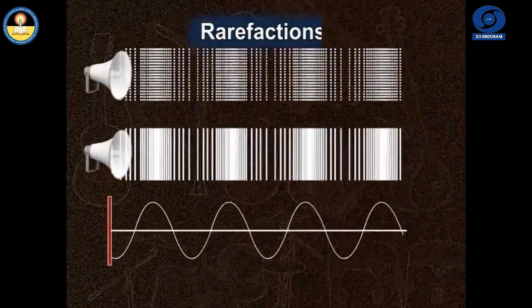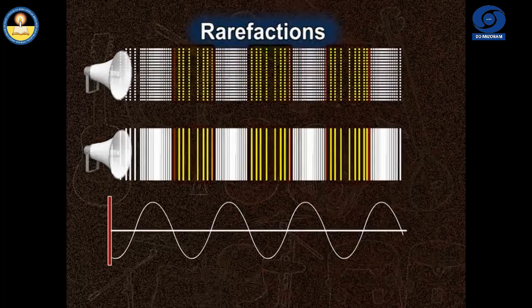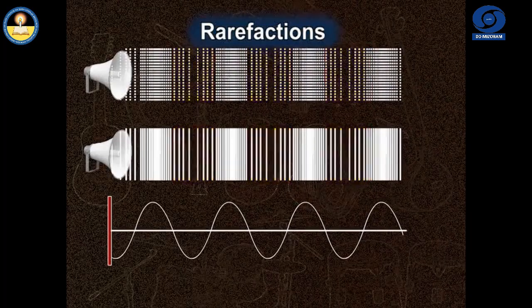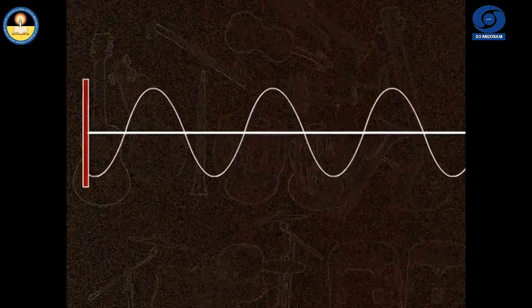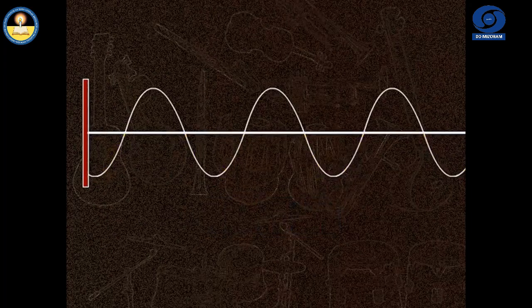Whereas the rarefactions are the region where the pressure as well as the density is less than their normal values, such regions are represented by the lower portion of the curve.